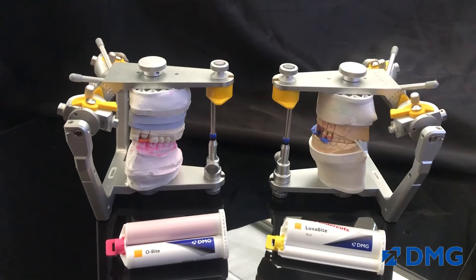I typically use two different types of bite registration material for my indirectly fabricated restorations. The first one is the polyvinyl siloxane material like Obite from DMG.